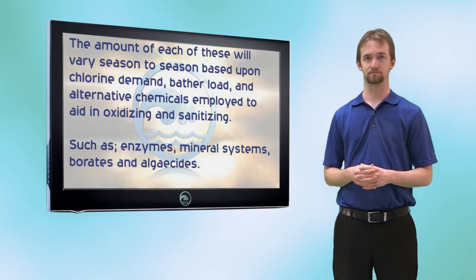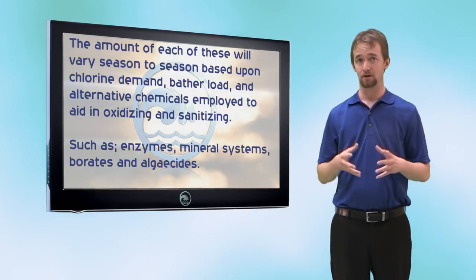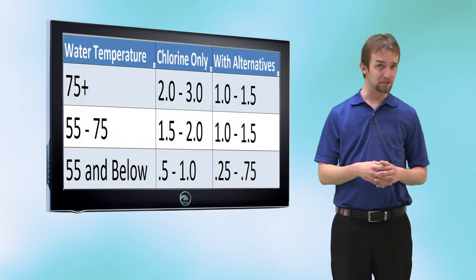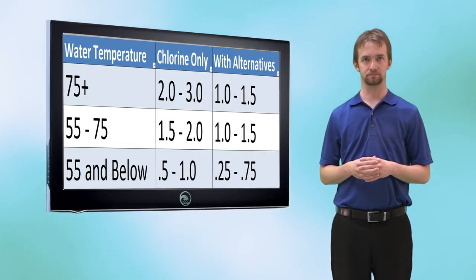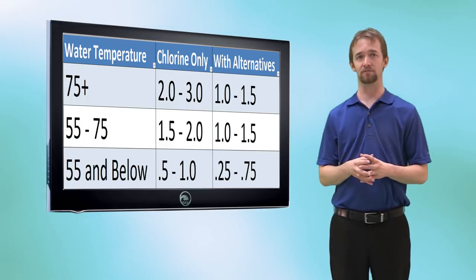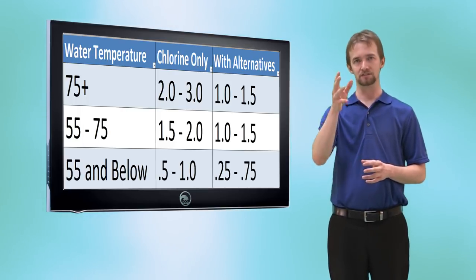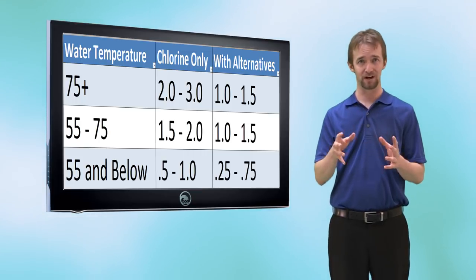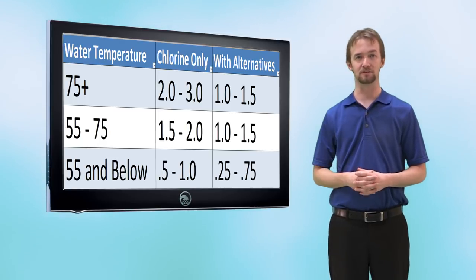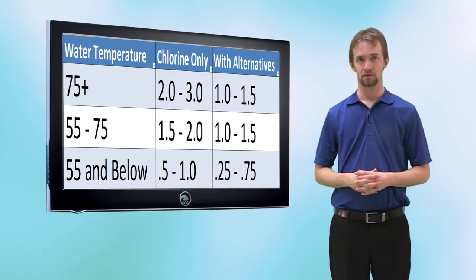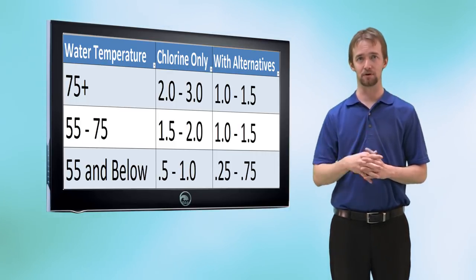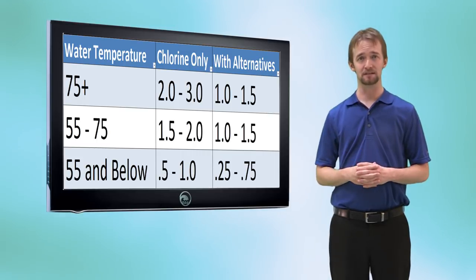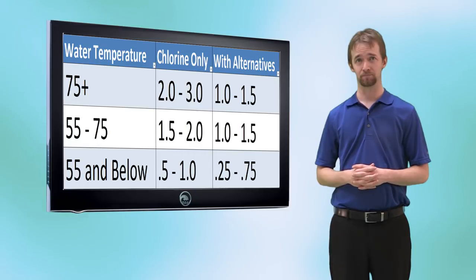How much chlorine do you actually need to hold in your pool? That depends on several factors — let me pull up a chart. One of the most important factors is water temperature, listed on the left. The other factor is what chemical regimen you're using — strictly chlorine, or alternatives. As you can see, a chlorine-only pool has to hold almost double the chlorine compared to pools using alternatives. At 75°F and warmer, a chlorine pool needs to hold 2–3 ppm, while a pool using alternatives like enzymes, mineral systems, Supreme Plus, and algaecides only needs to hold 1–1.5 ppm.